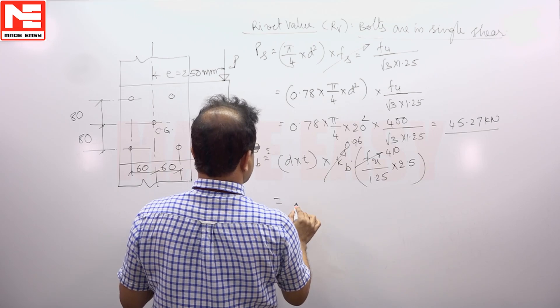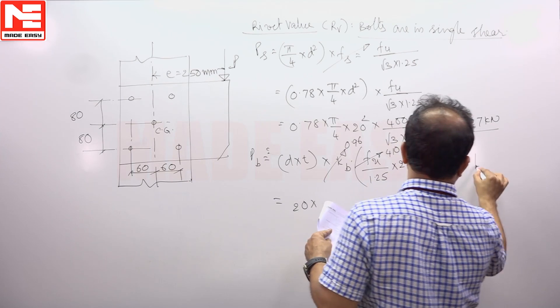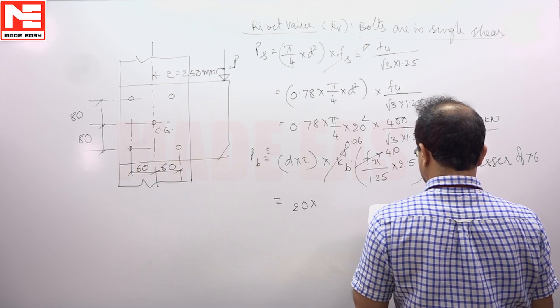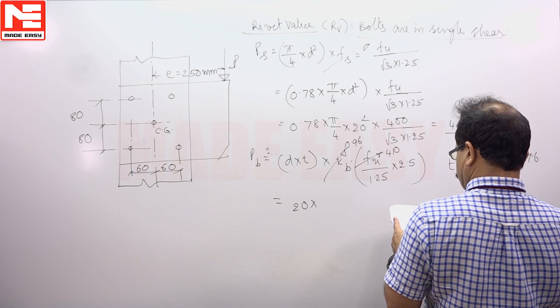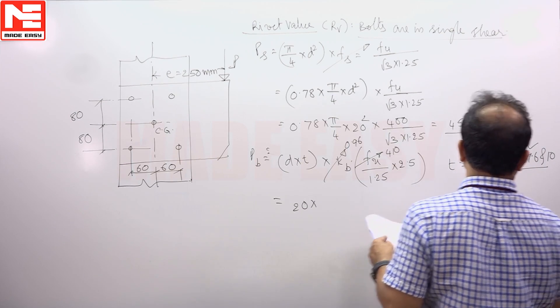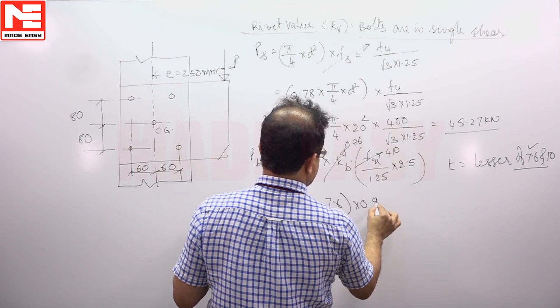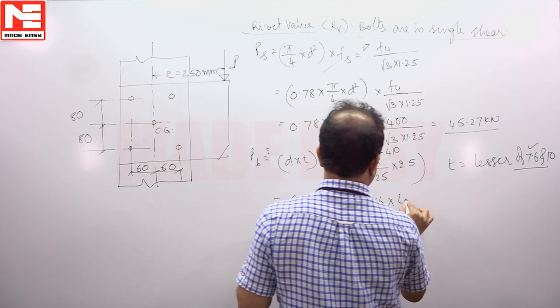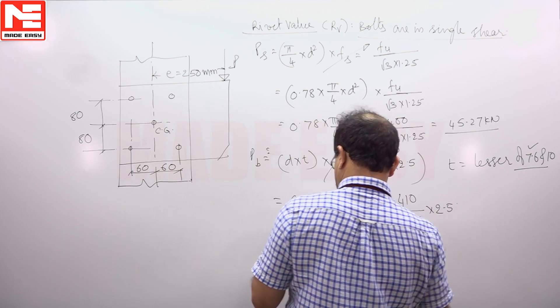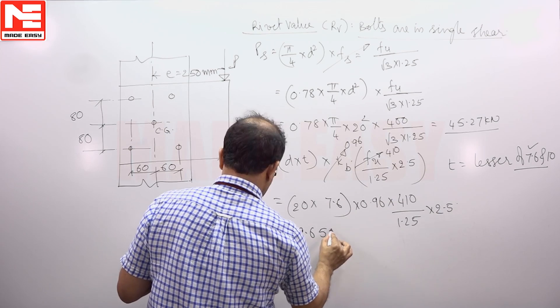Now diameter of the bolt is 20 mm, thickness of the thinner plate T is the lesser of 7.6 and 10 mm, so 7.6. 20 × 7.6 × 0.96 × 410/1.25 × 2.5 gives 119.65 kN.